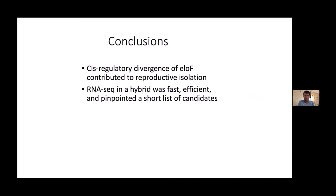In conclusion, we found that cis-regulatory divergence of ELO-F seems to have contributed to reproductive isolation of multiple Drosophila species. More generally, RNA-seq in a hybrid was a fast and efficient way to pinpoint a short list of candidates.